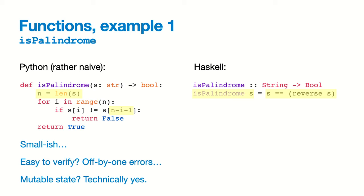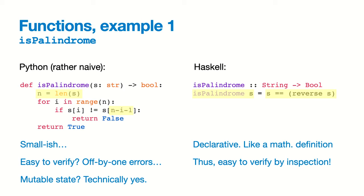This Haskell version is definitely small, and very declarative — it's basically the mathematical definition of what a palindrome is: something equal to its own reverse. It is rather easy to verify by inspection. You don't have to think about whether n-minus-i-minus-one is right. There is no mutable state, and the absence of anything written to memory is one of the things that makes this function pure.